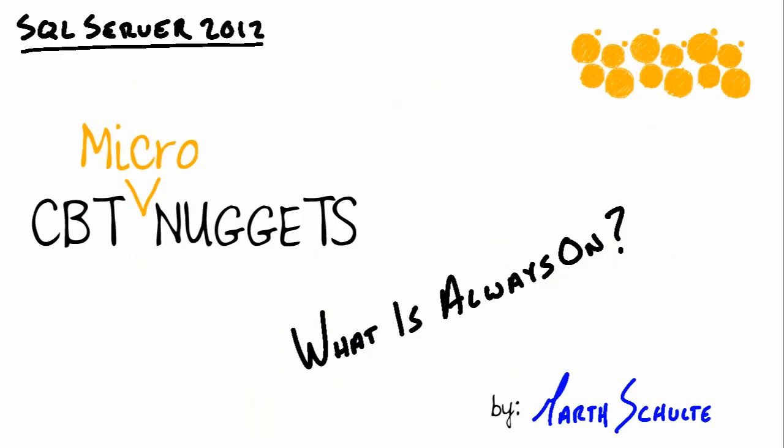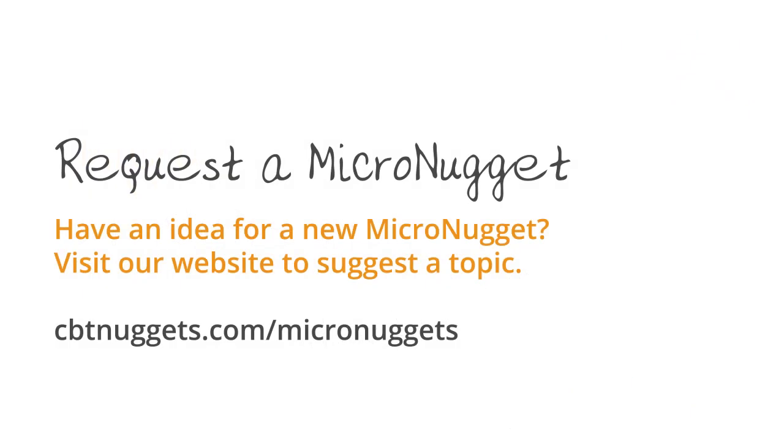In this CBT Nugget, we talked about Always On — a term that describes two technologies: Failover Clustered Instances and Availability Groups, both of which help with high availability and disaster recovery at the SQL Server instance level and the database level. I hope this has been informative for you, and I thank you for viewing.